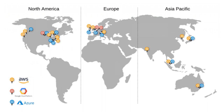Let's see the broader categories of these regions. We have three main categories: North America, which includes North America and Canada, then the European region, and the Asia Pacific region. We are going to see the details of the locations or the regional locality for each of these regions.